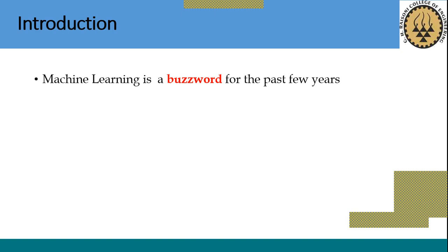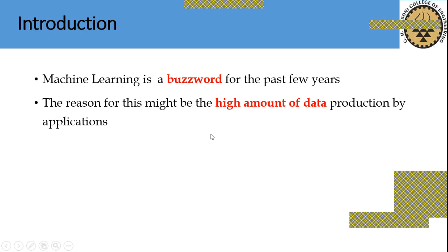Why are AI, machine learning, and deep learning so popular? Were they invented after 2000? Is AI a very new concept or technology? The answer is no. There are two main reasons why machine learning is so popular nowadays. The first reason is the high amount of data produced by applications, especially over the last two or three years.